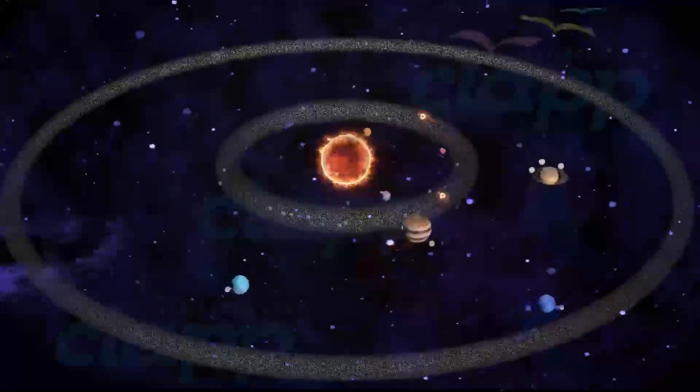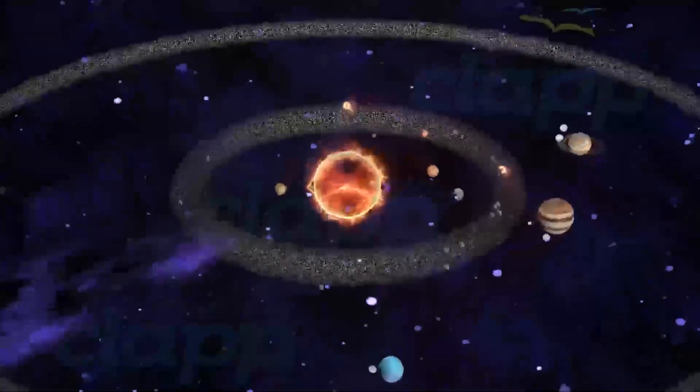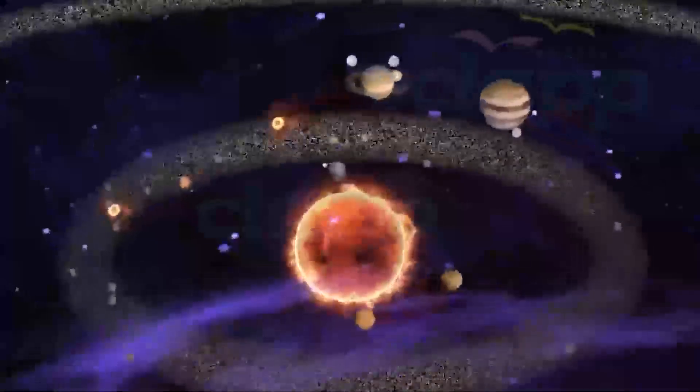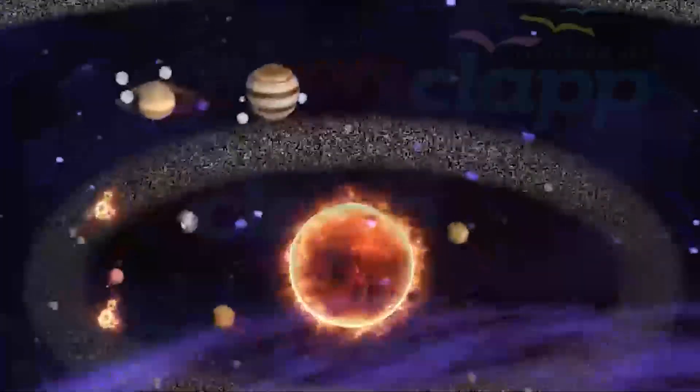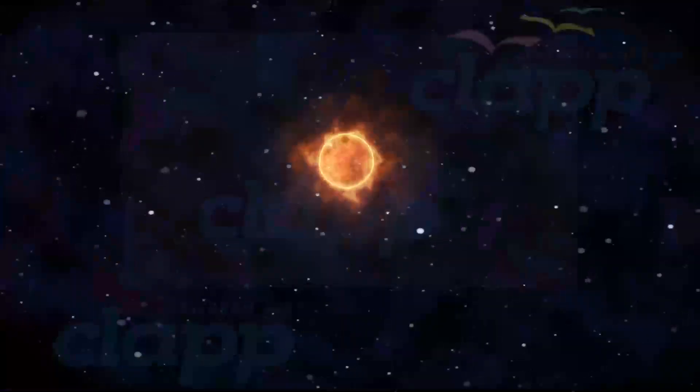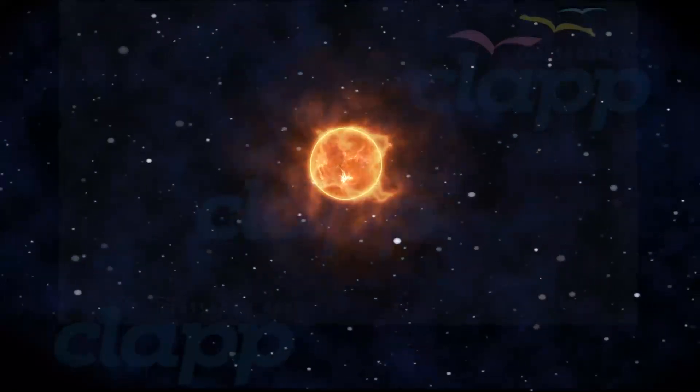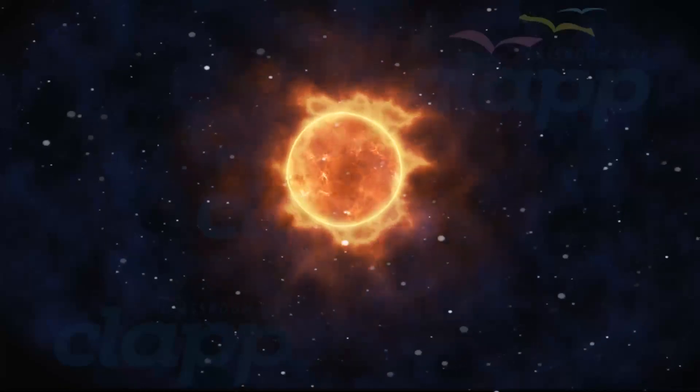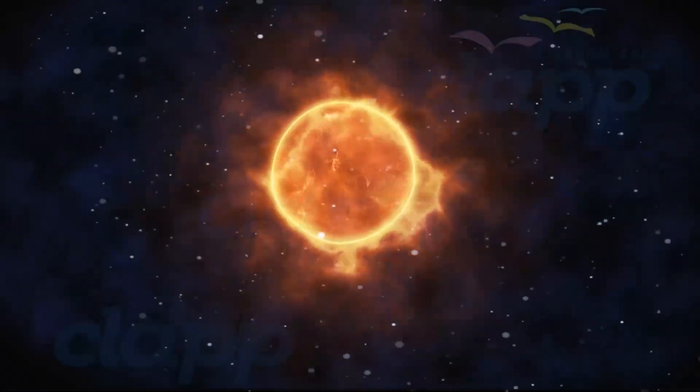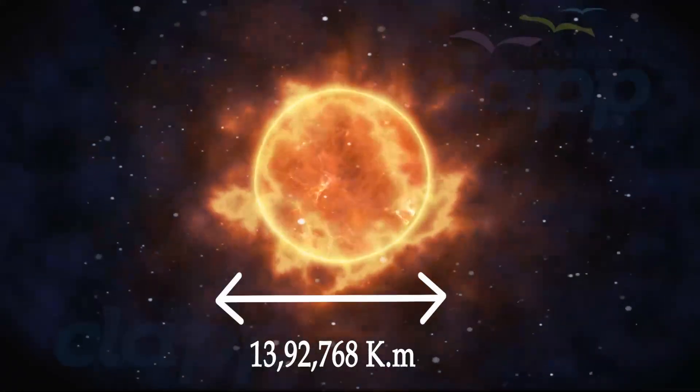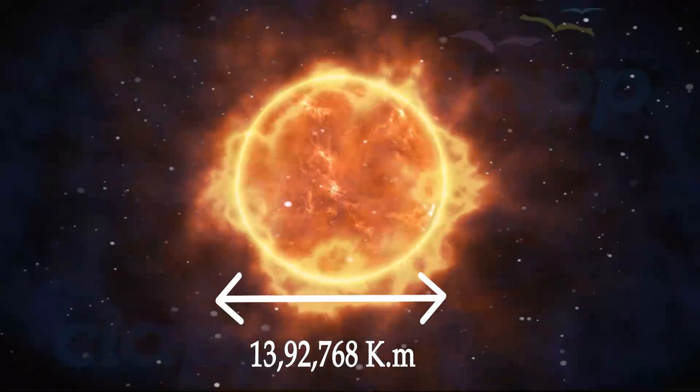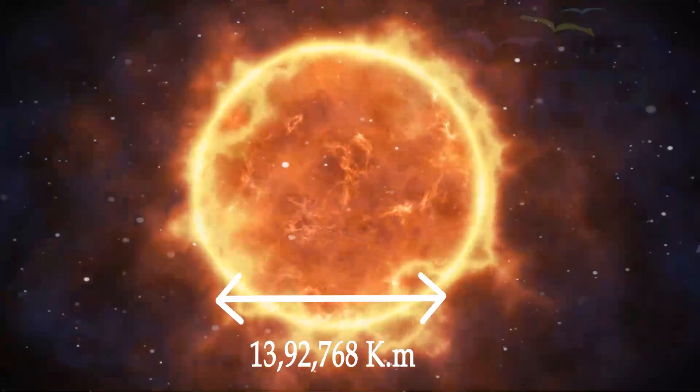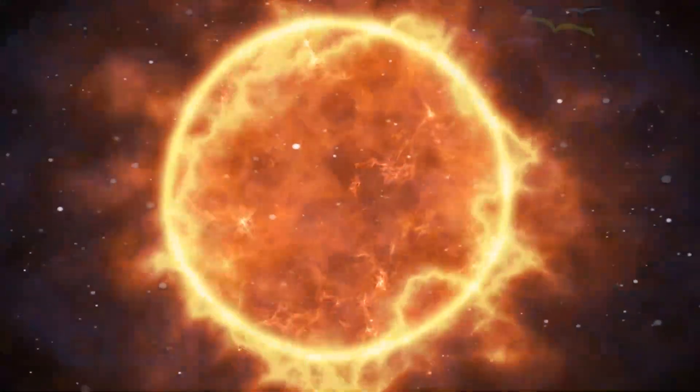Our solar system consists of the Sun and eight planets orbiting around the Sun, along with satellites orbiting these planets. The Sun is the star at the center of the solar system. It is a nearly perfect ball of hot plasma. Its diameter is about 13,92,768 kilometers, with a radius of about 6,96,340 kilometers.